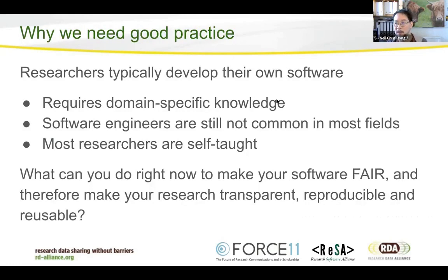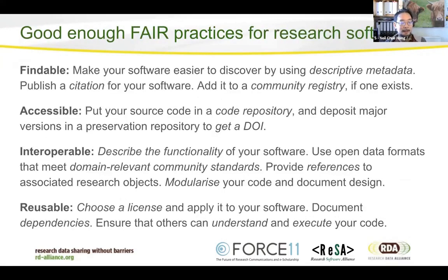You're probably interested in knowing what you can actually do right now. Here are good enough practices for FAIR software while we finish the principles. To make your software findable, make sure it's easy to discover by using descriptive metadata — a descriptive title, author information, and keywords. Publish a citation for your software so people know how to credit you, and add it to a community registry if one exists.